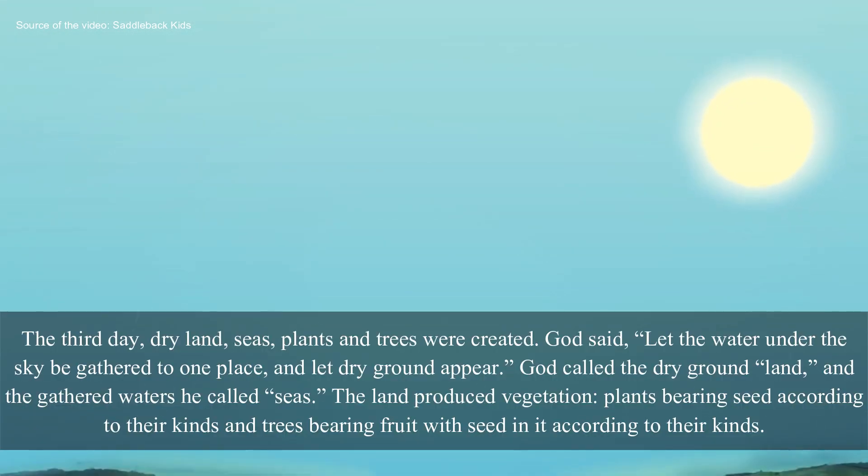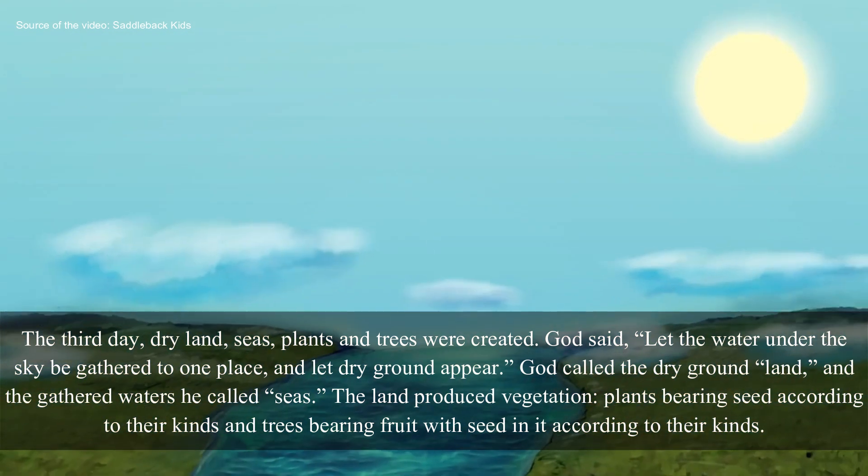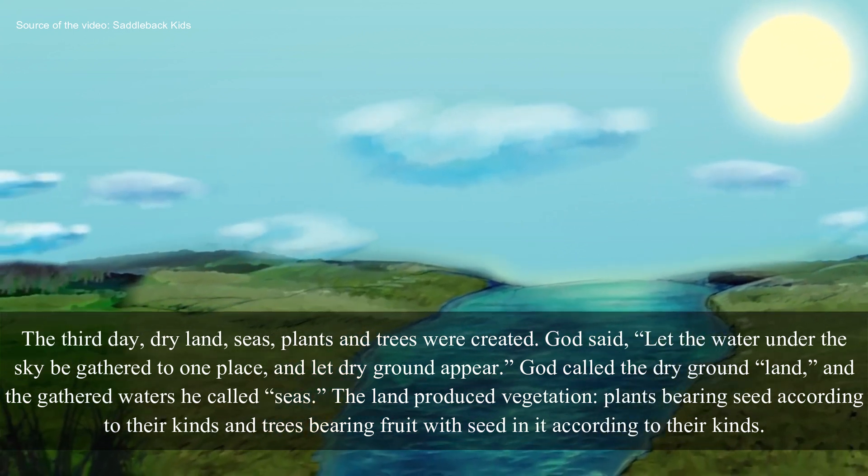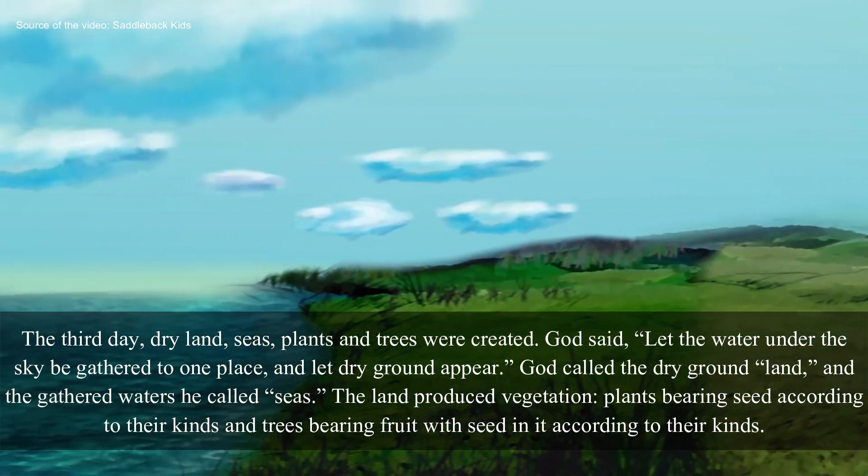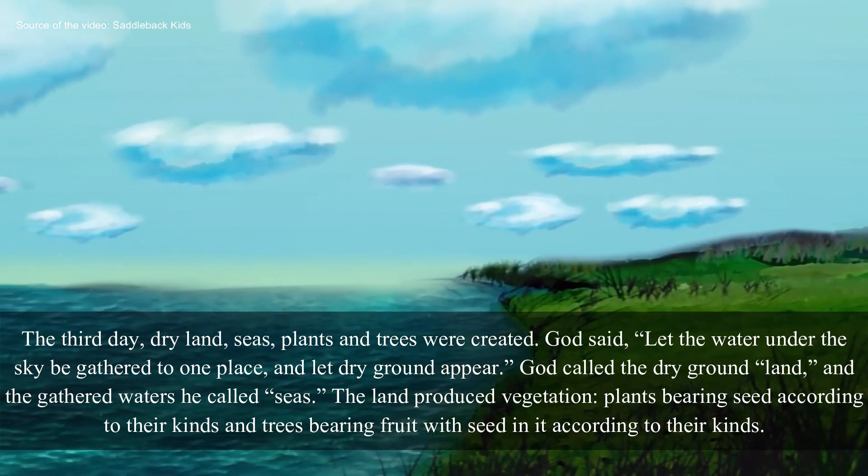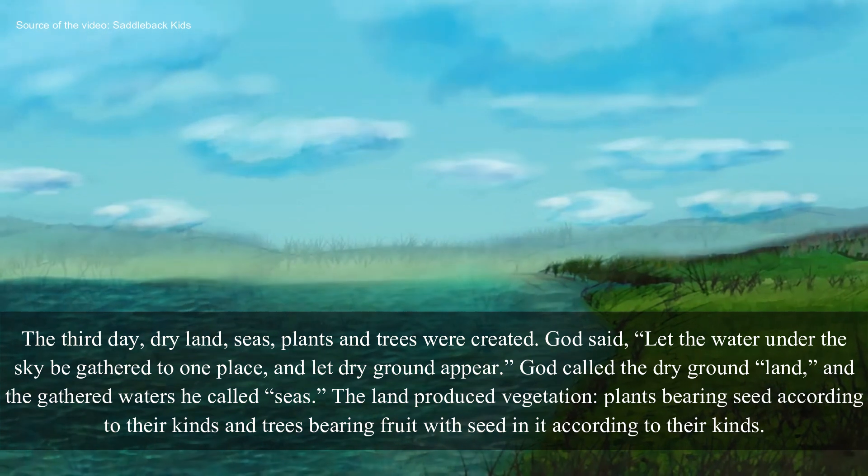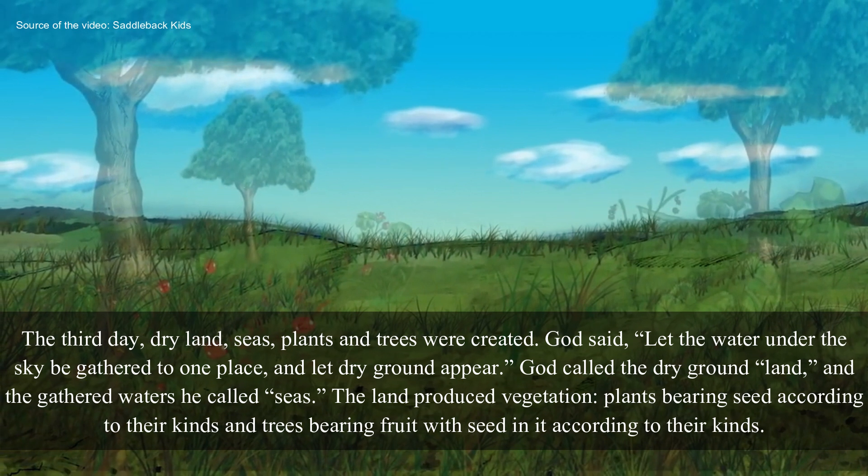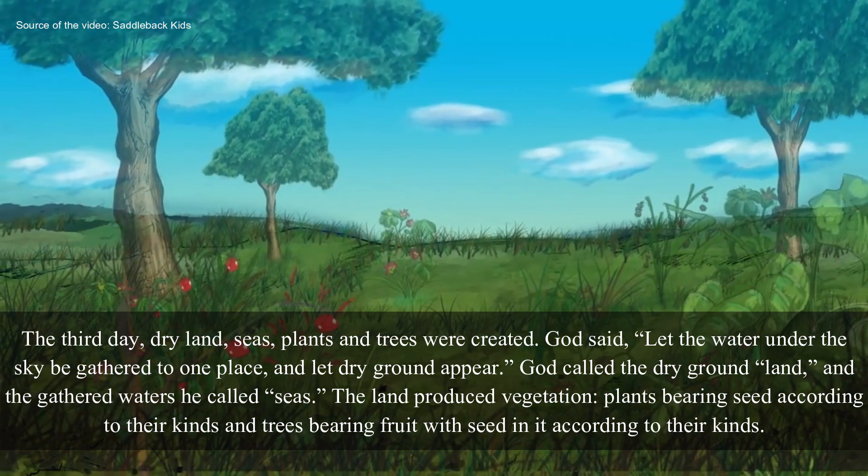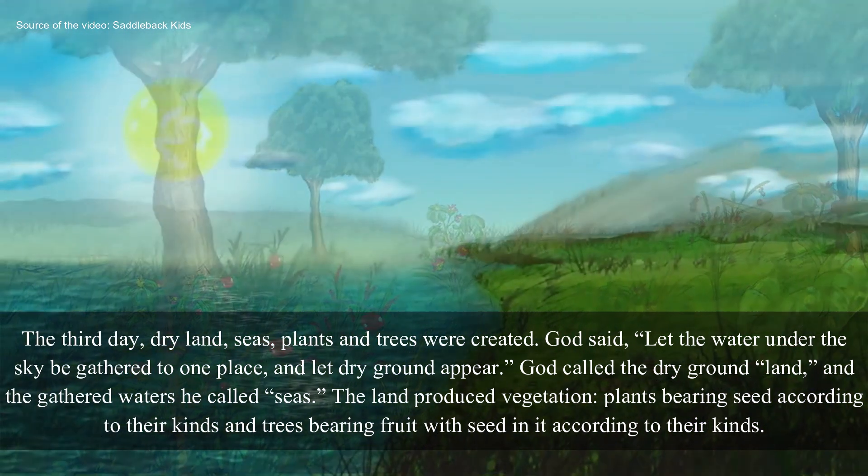The third day, dry land, seas, plants, and trees were created. God said, Let the water under the sky be gathered to one place, and let the dry ground appear. God called the dry ground land, and the gathered waters He called seas. The land produced vegetation, plants bearing seed according to their kinds, and trees bearing fruit with seed in according to their kinds.